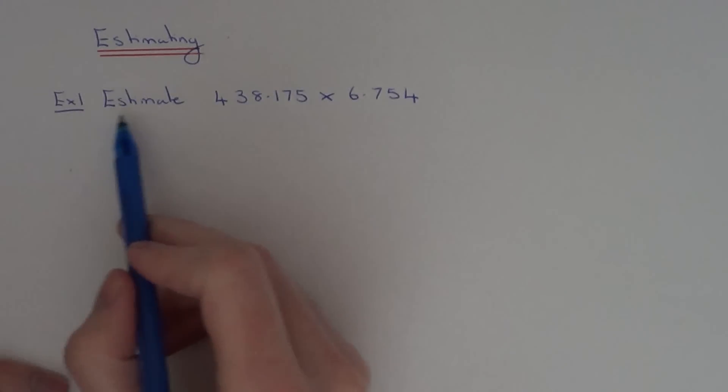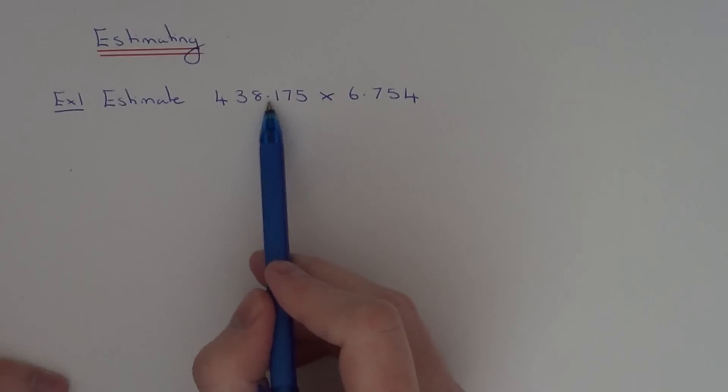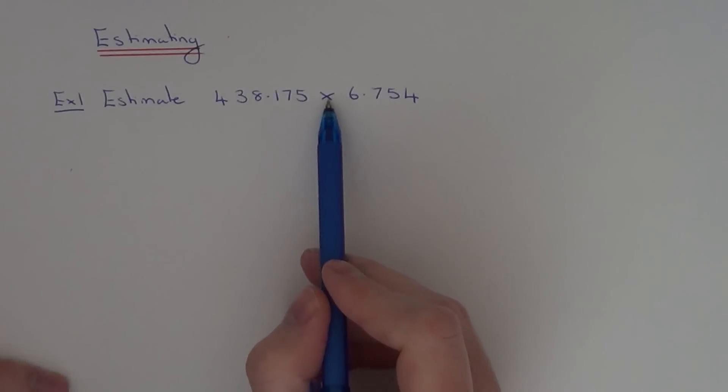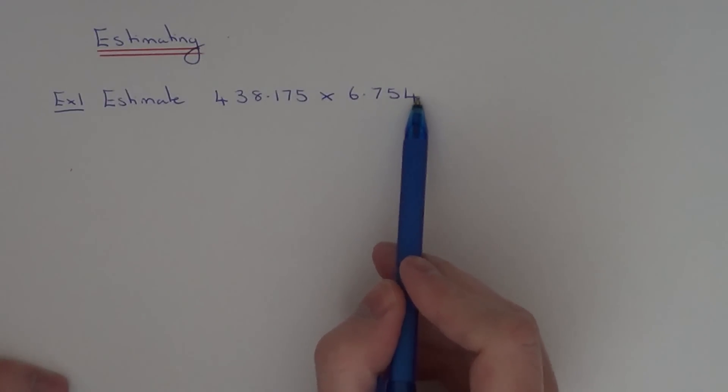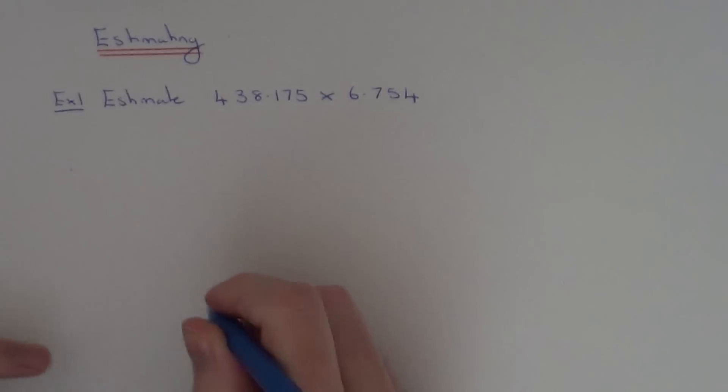So let's look at example one. We've got to estimate 438.175 multiplied by 6.754. So let's round each number off to one significant figure.